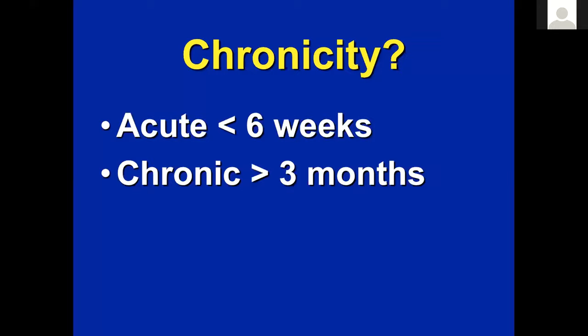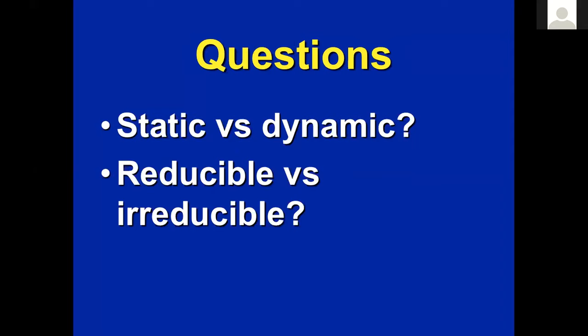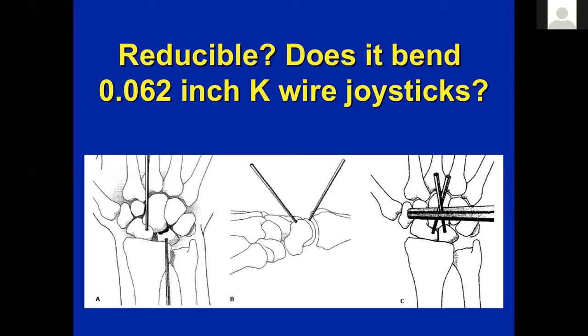Let's talk about treatment. A few questions to ask yourself: is the problem static or dynamic? Is it reducible or not? Is there arthrosis yet? How do you define reducible? If you try to put joysticks in and it's bending 62K wires, in my mind this is not reducible. You have a lot of options, none perfect. You can repair and do any capsulodesis, the triligament tenodesis described by Marc Garcia-Elias, Lluch, and Stanley, or the ANAFAB by Michael Sandow — Dr. Wolf has had good success with this recently as well.